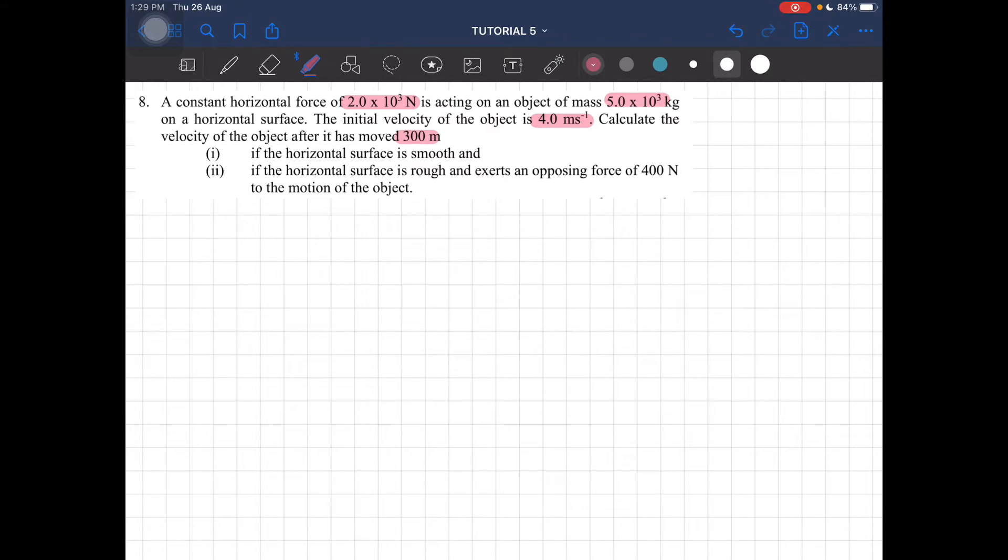So after it has moved 300 meters, we need to find the velocity. Part one: if the surface is smooth. Part two: if the surface is rough, which exerts an opposing force of 100 newtons - that's the frictional force.